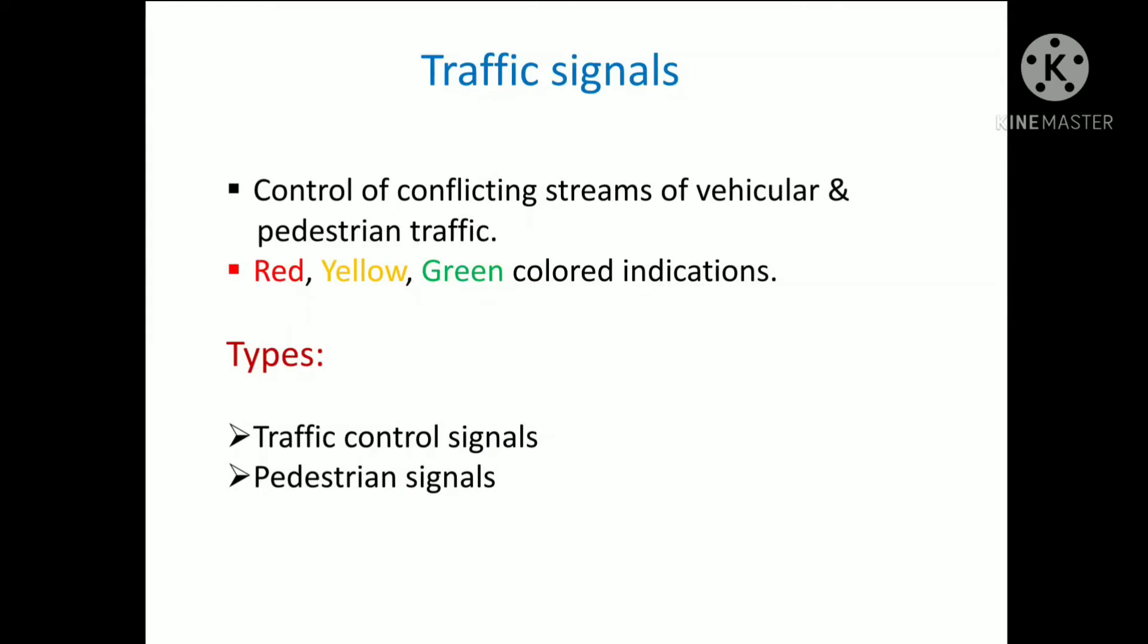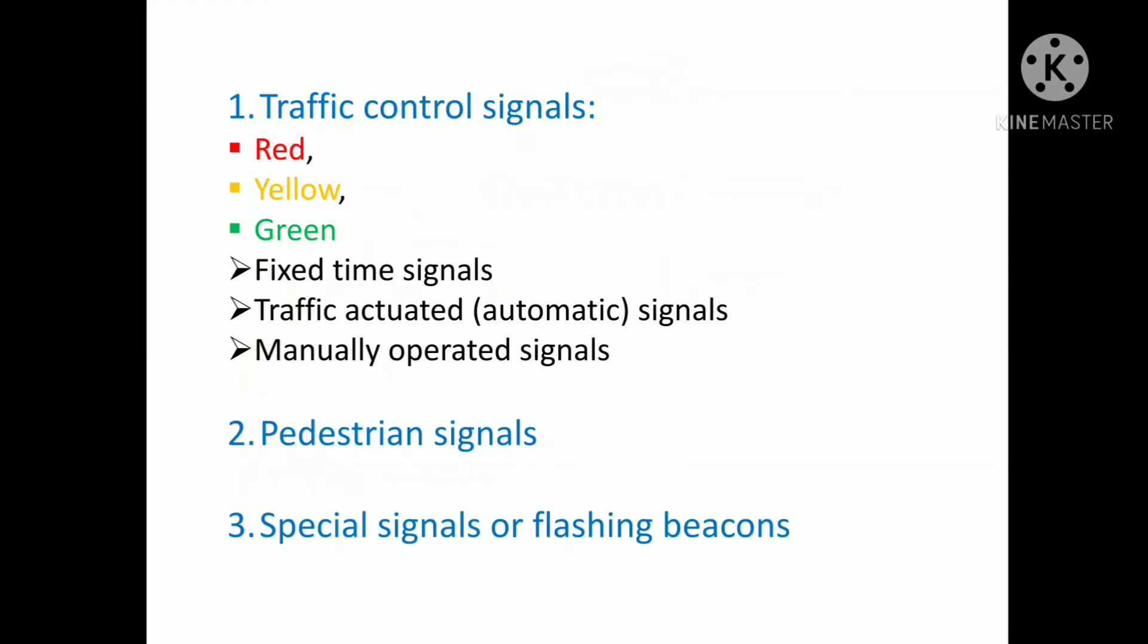Now let's see about traffic control signals. These are provided with three colored light glows facing each direction of traffic flow. Red light indicates stop, yellow (amber) light indicates the clearance time for vehicles which have entered the intersection area by the end of the green signal.